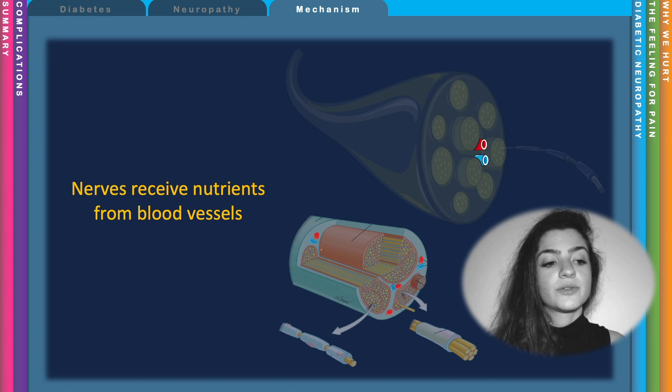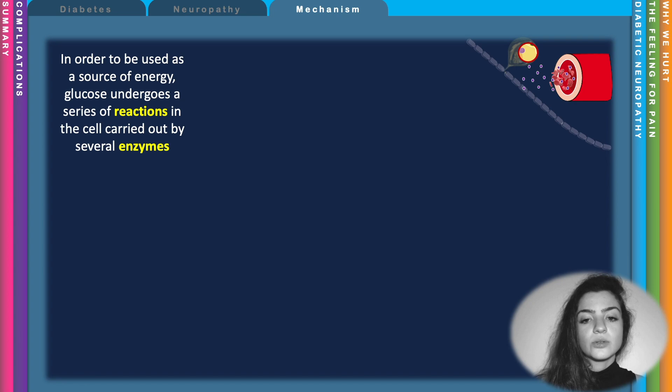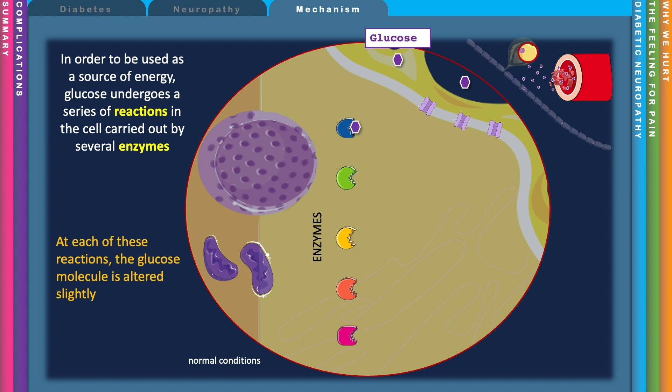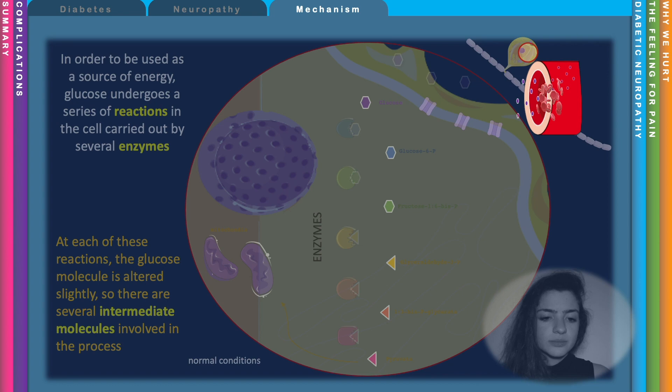Nerve cells receive nutrients from the blood vessels in the nerves. In order to use glucose as a source of energy, inside the cell we have enzymes which carry a series of reactions that alter the glucose molecule slightly. This is a process that involves many molecules and many chemical reactions.